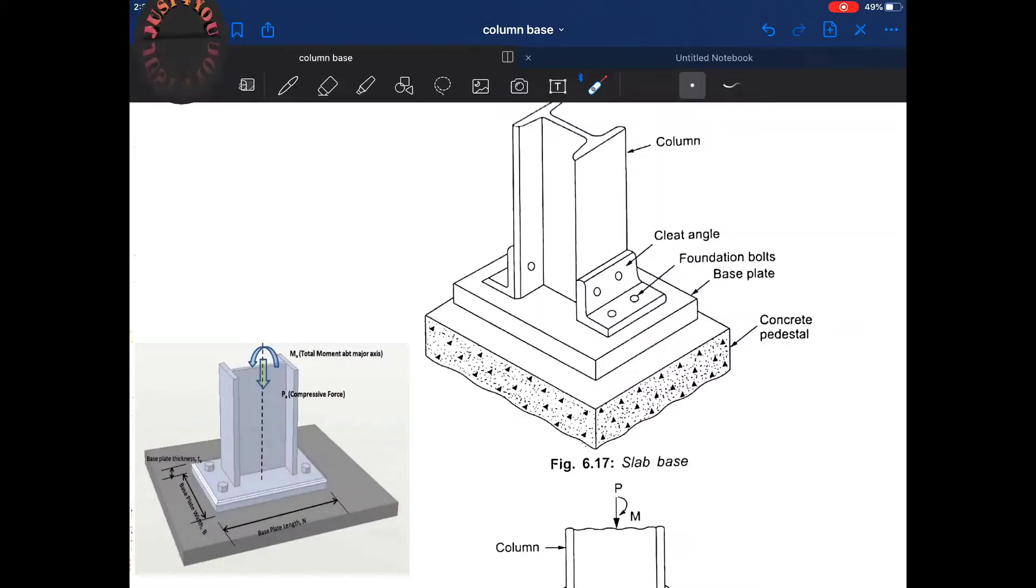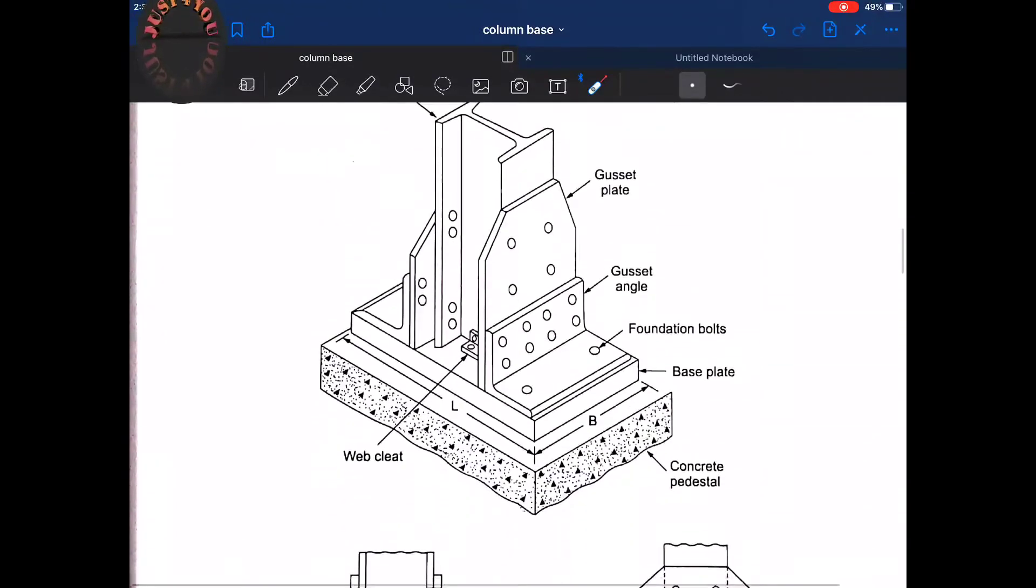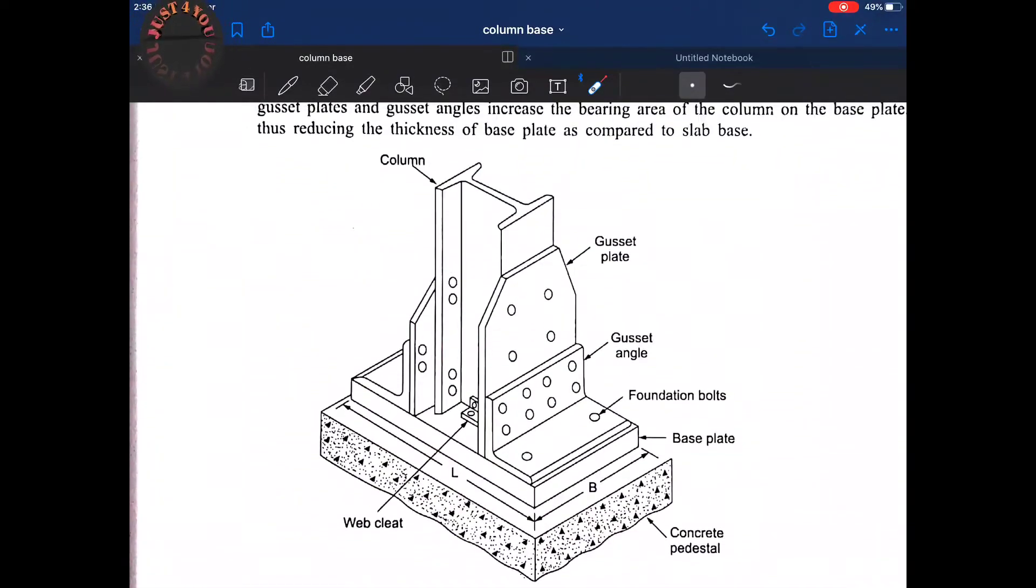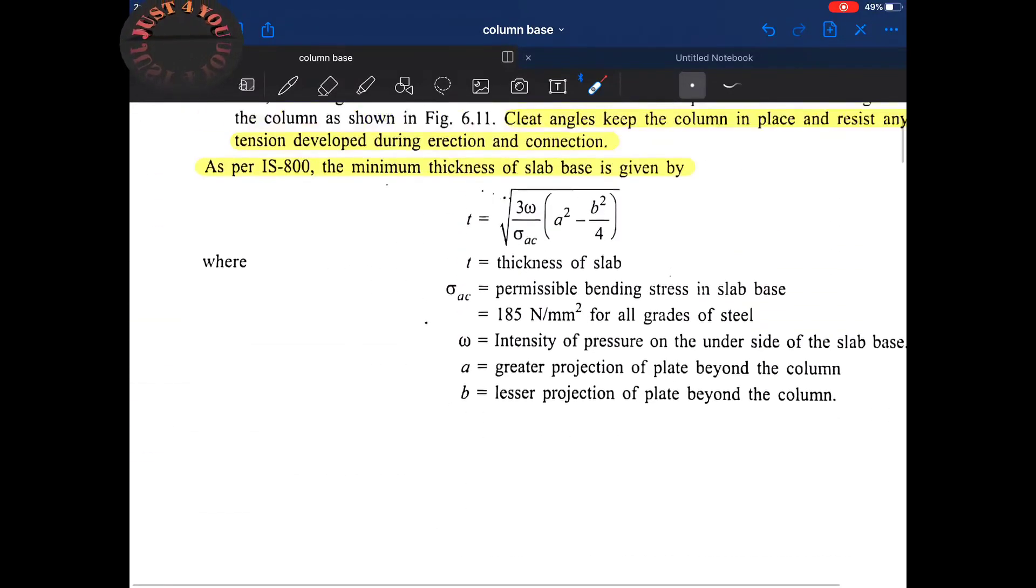Whereas in gusseted base, we use gusset plate and gusset angle in addition to the steel base plate. In this video lecture we will strictly stick to the slab base only.